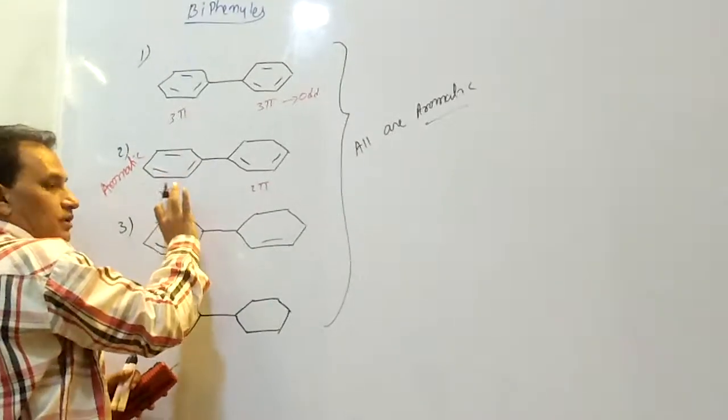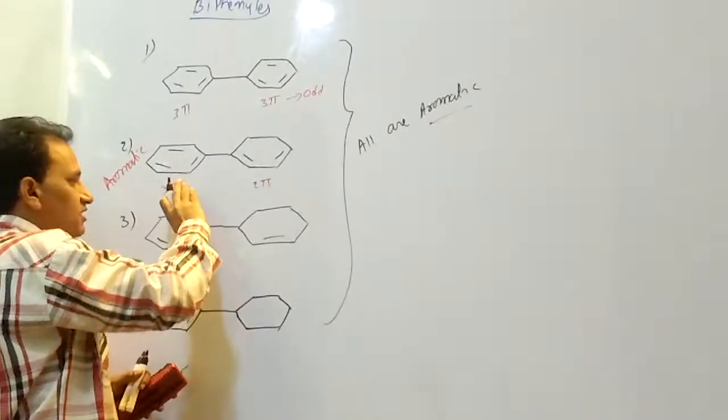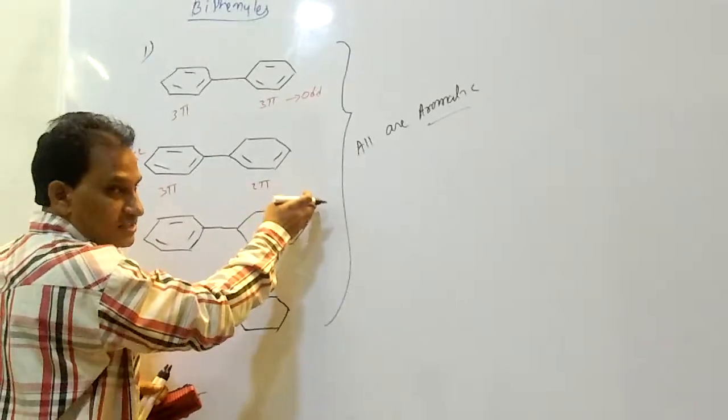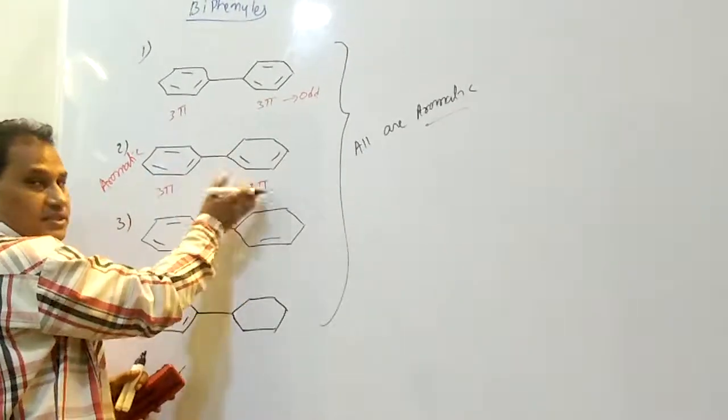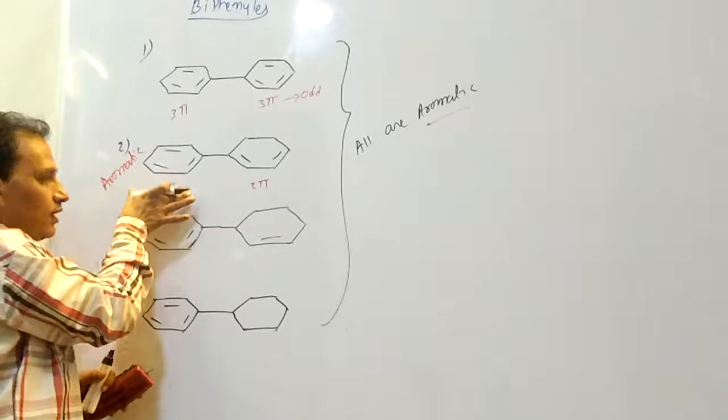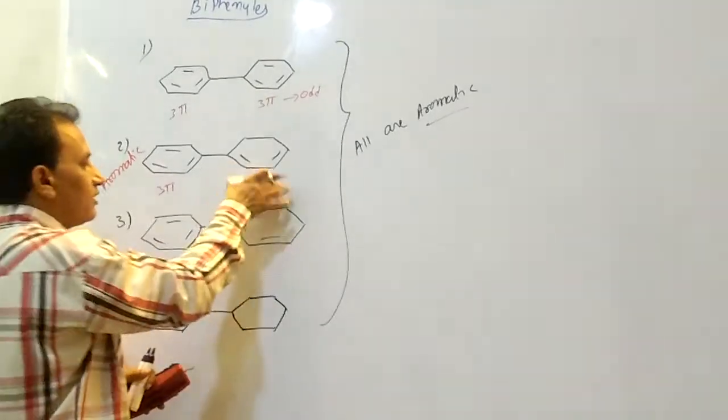Why? Because during conjugation, during resonance, these pi bonds also shuffle to this. So pi bonds keep continuously shuffling. That is why one compound is aromatic, another one also aromatic.